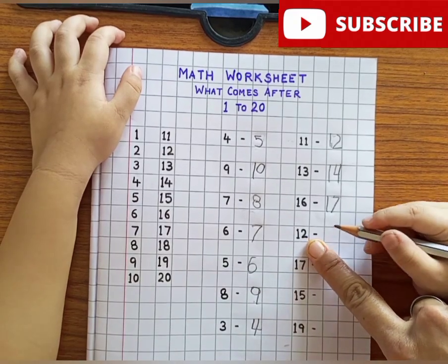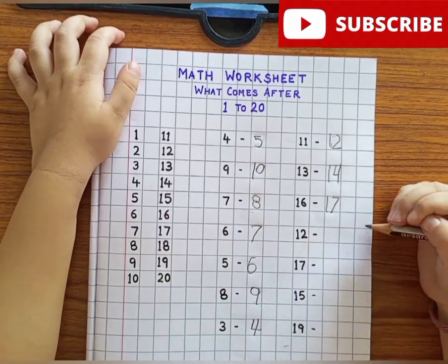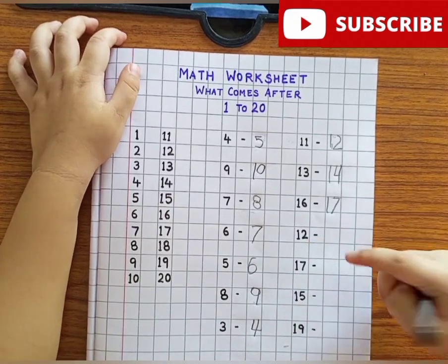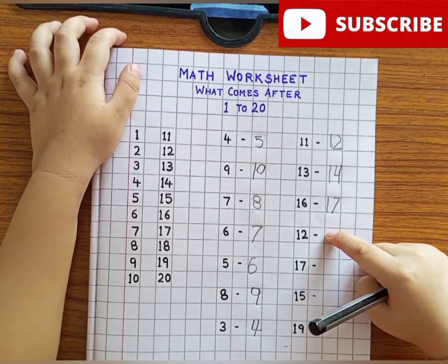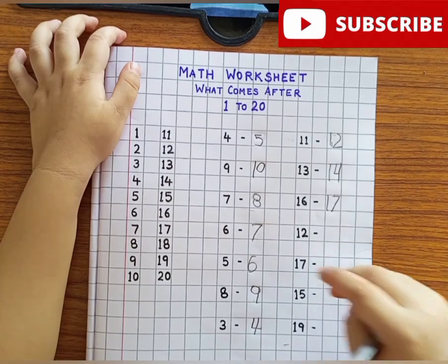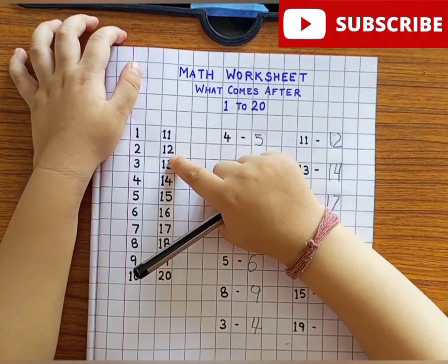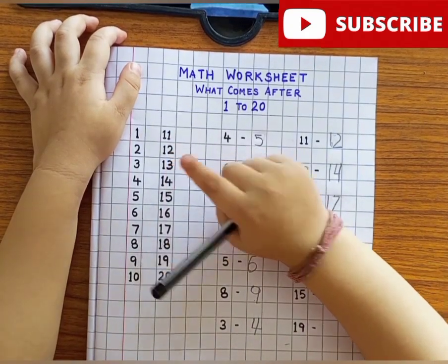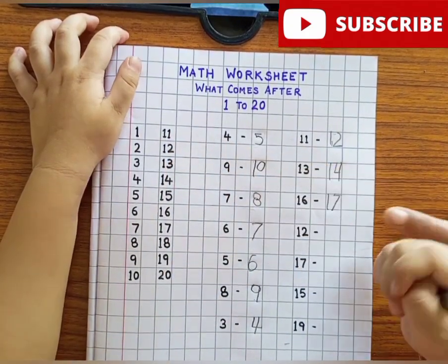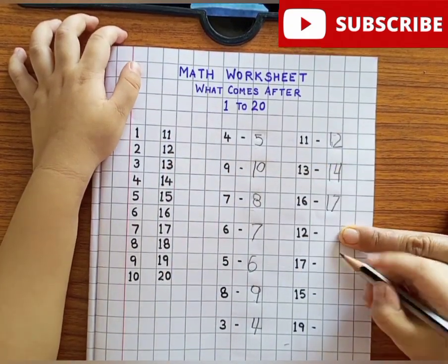What comes after 17? 18. Very good. Right here.